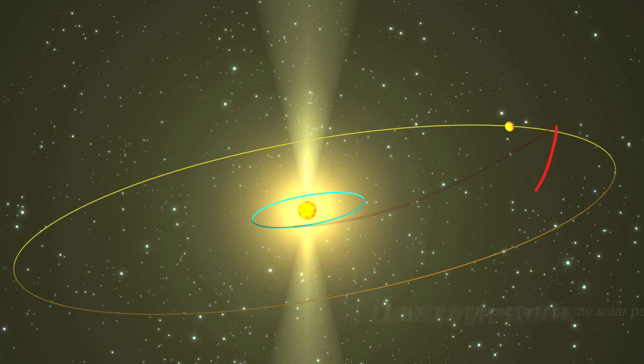Ulysses was the first mission to fly over the Sun's poles, making it possible to map the solar wind in 3D for the first time.